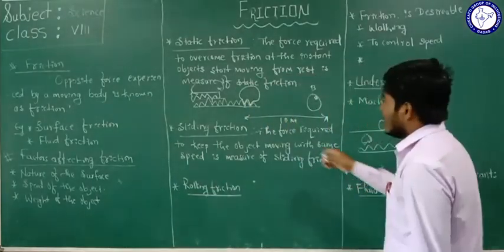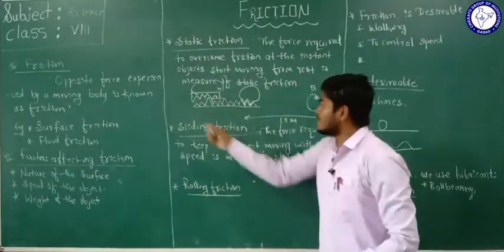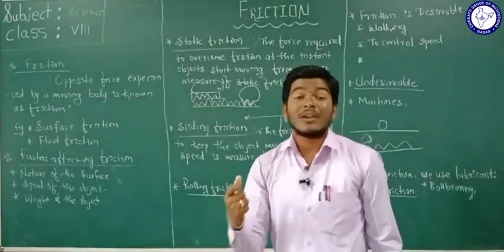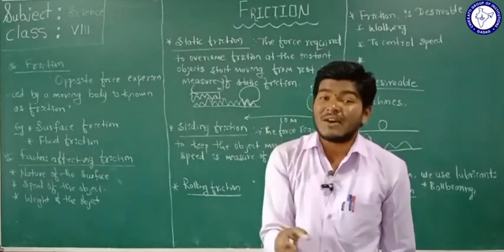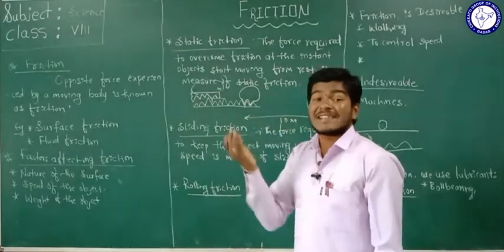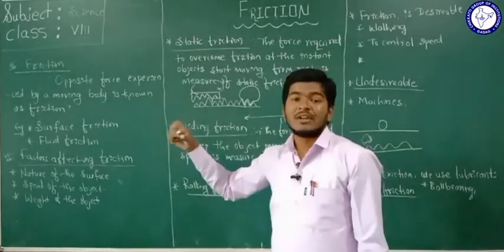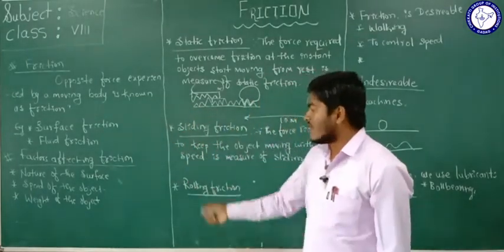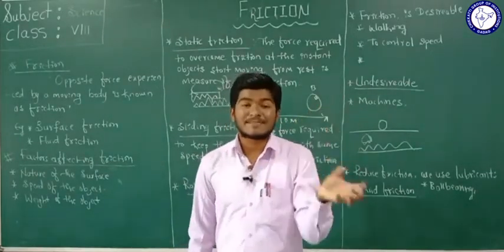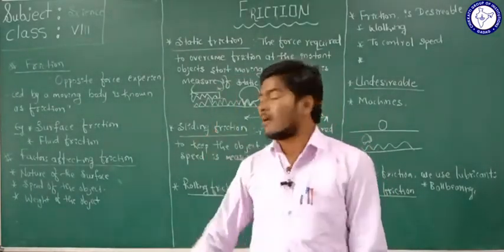Why does surface friction decrease at higher speed? Because the marble moves very fast at the starting point when it has great force to overcome the frictional force of the surface. The third factor is the weight of the object. As the weight of the object increases, the frictional force experienced by the object also increases; as weight decreases, friction decreases.